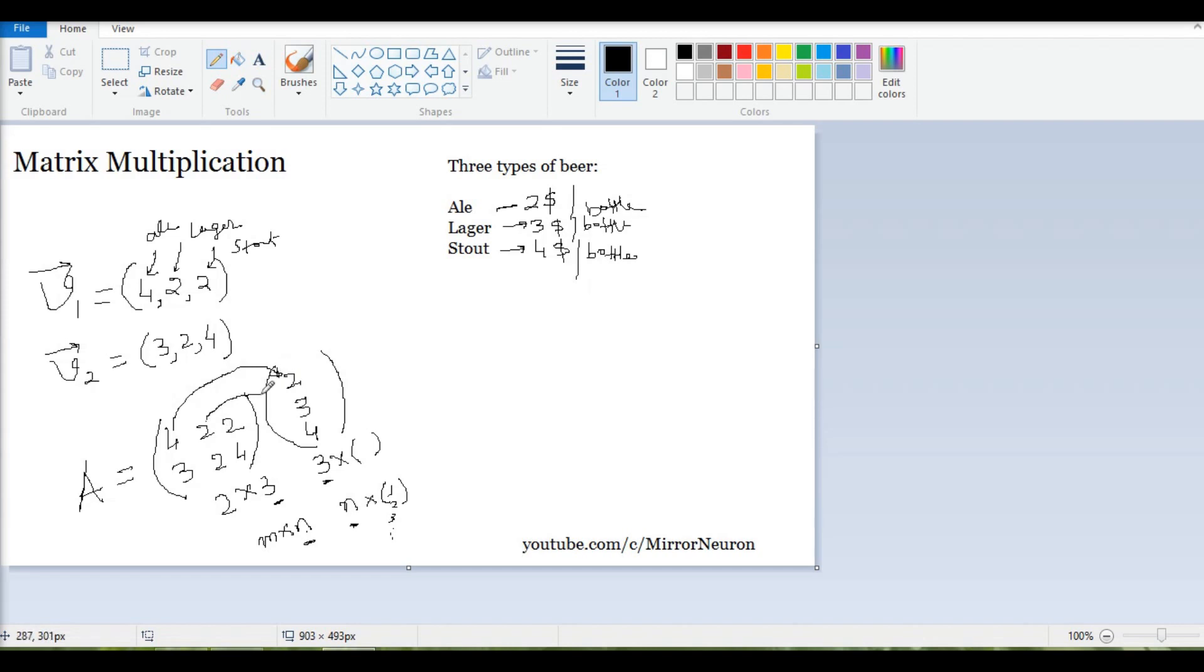So what will I get in the first element? I'll get 4 times 2, which is 4 times 2 plus 2 times 3 plus 2 times 4. And similarly, 3 times 2...